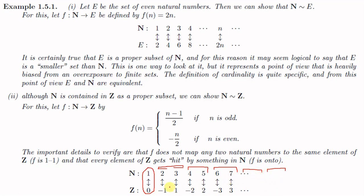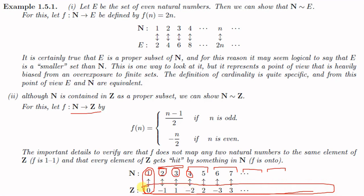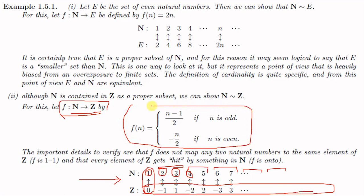All integers are covered, so every element of Z is generated. Since all images of elements of N are different, the function f from N to Z is one-to-one. Since every integer has a pre-image in N, the function is onto. Therefore f from N to Z defined by f(n) = (n−1)/2 if n is odd and −n/2 if n is even is one-to-one and onto, so N ~ Z.